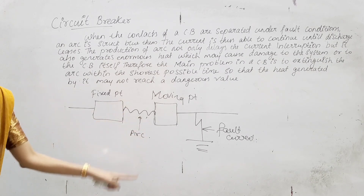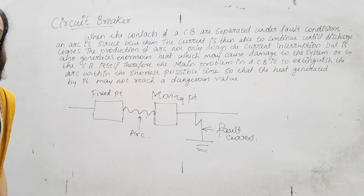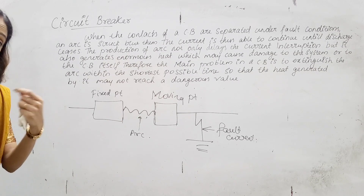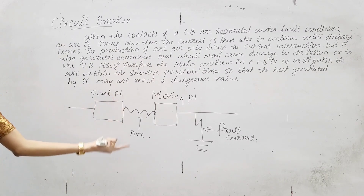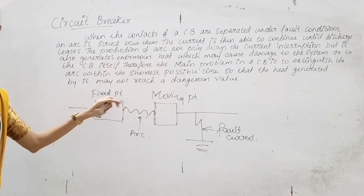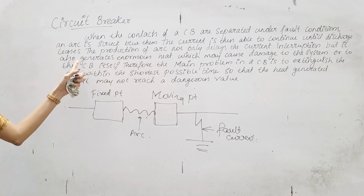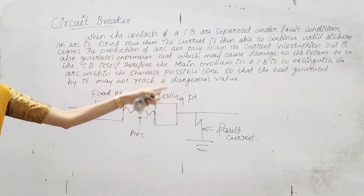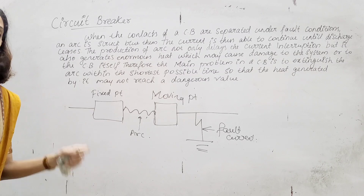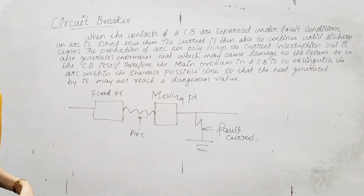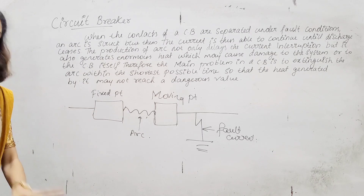Now, with the fixed contact and moving contact, the arc is formed and heat is produced. Because this arc is formed, heat will be produced. It generates enormous heat which may cause damage to the system or to the CB itself.